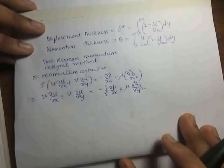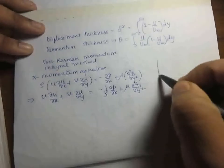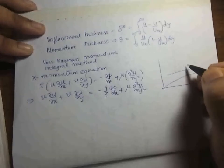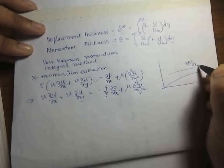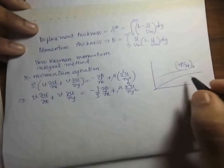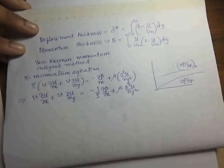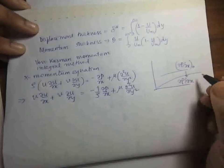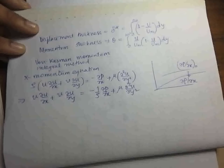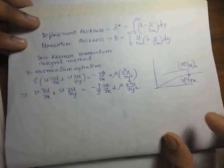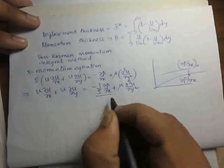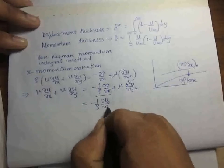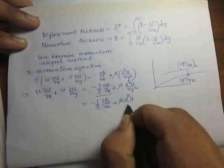Whatever is the external condition, del p / del x external is the same as del p / del x inside the boundary layer. There is no variation of pressure in the y direction, and thus as a consequence the equation becomes minus (1/rho)(del p_outside / del x) plus mu (d²u / dy²).